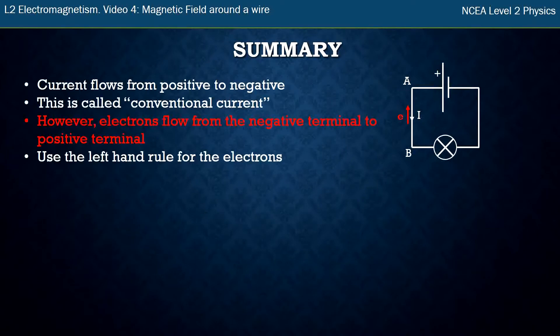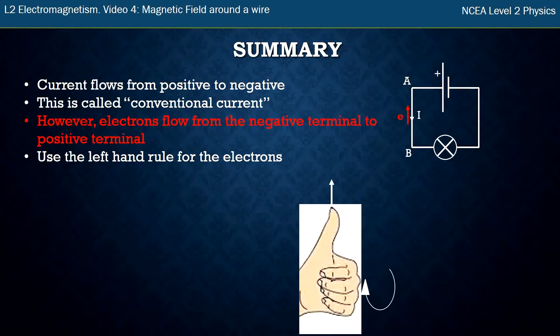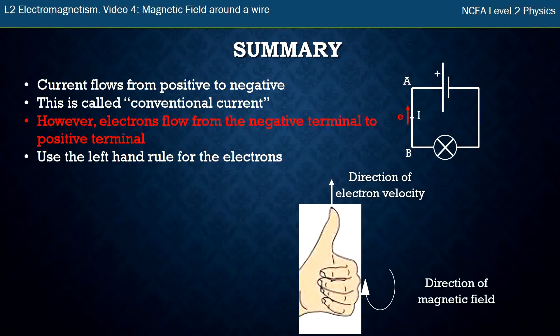So in summary: current flows from positive to negative and that's called the conventional current, but electrons go the opposite direction. We use those electrons to apply the left hand rule to figure out the magnetic field around the wire. My thumb points in the direction the electrons are going and my fingers curl in the direction of the magnetic field.